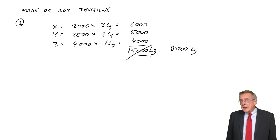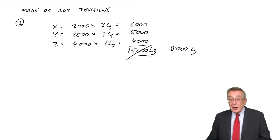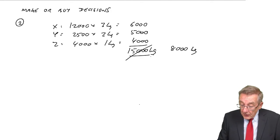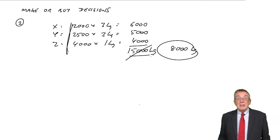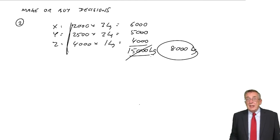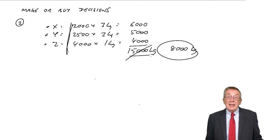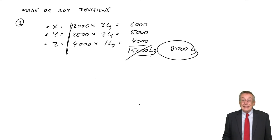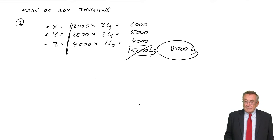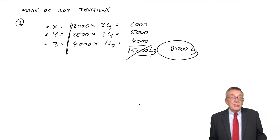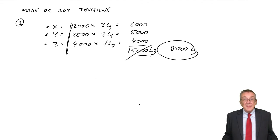Product Y, we can make ourselves for $12, or buy it from someone else for $17. We'd rather make it ourselves. Z, again, we'd rather make it ourselves. But we already know we can't make them all ourselves because we don't have enough kilos. And so, what we've got to decide is how many units will we make ourselves using the 8,000 kilos available? And how many units will we buy from another company? And we want, obviously, the cheapest cost.